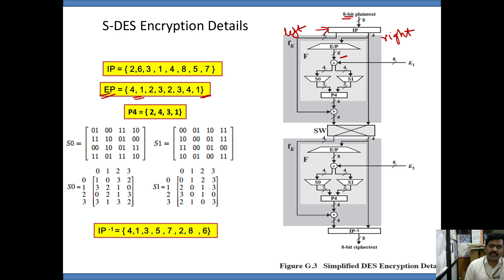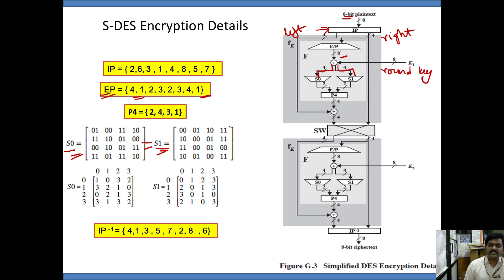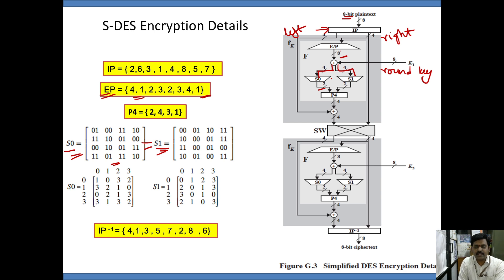The 8 bits from the expansion table get XOR'd with the round key of the first round. Bitwise XOR is performed to produce the output, and subsequently those 8 bits again get divided into two groups of 4 bits, each undergoing an S-box operation which is the substitution operation. Each 4-bit group is given to two S-boxes — S0-box and S1-box — which are substitution boxes. Each box takes 4 bits as input, producing 2 bits as output.